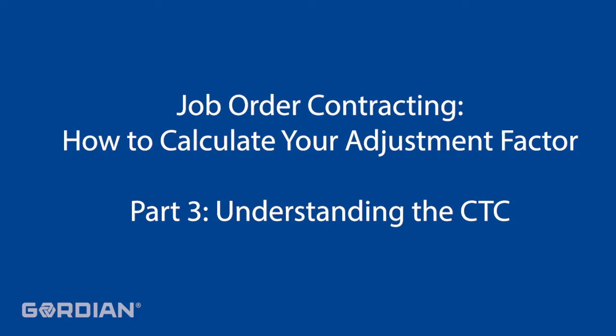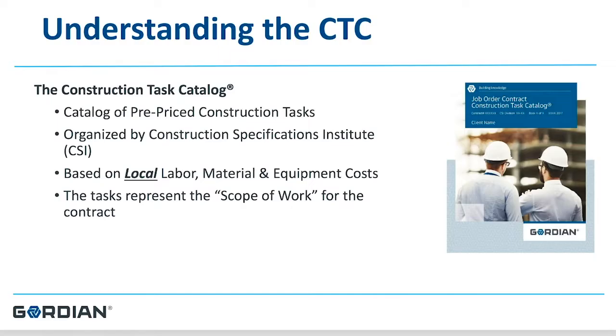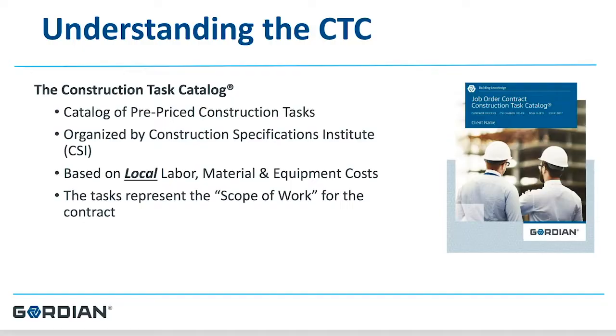Understanding the construction task catalog may be one of the biggest hurdles that the bidding contractor has to grapple with initially. The CTC is a large volume of pre-priced construction tasks — upwards of 180,000 construction-related tasks — with all divisions of construction represented. All tasks have a very robust, detailed description, and all will have a unit price for the installation of the item referred to. All unit prices are based on local labor, material, and equipment costs. Gordian does the pricing research to help establish the unit costs in each book.